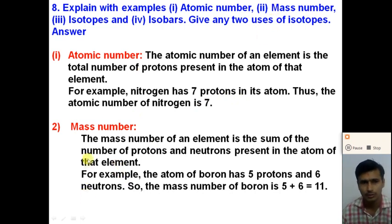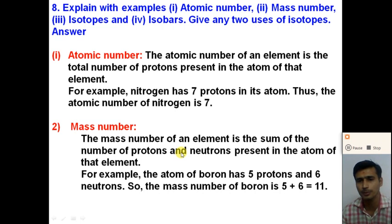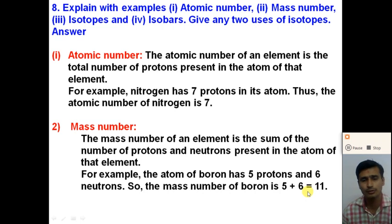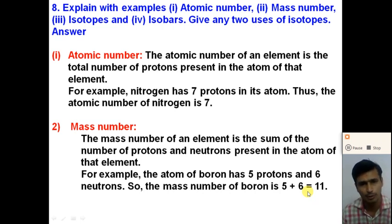The mass number of an element is the sum of the number of protons and neutrons present in the atom of that element. For example, carbon has 6 protons and 6 neutrons, so its mass number is 6+6=12. Boron has 5 protons and 6 neutrons, so its mass number is 5+6=11. From the atomic number we get the number of protons, and from the mass number we get the number of protons plus neutrons.